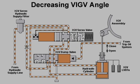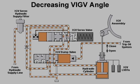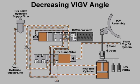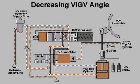If the VIGV operating sequence requires a smaller variable inlet guide vane angle, the control system will shift the spool valve of the IGV servo valve to a position which allows hydraulic fluid to flow to the lower section of the hydraulic cylinder. Hydraulic fluid from the upper section of the hydraulic cylinder is dumped to drain.